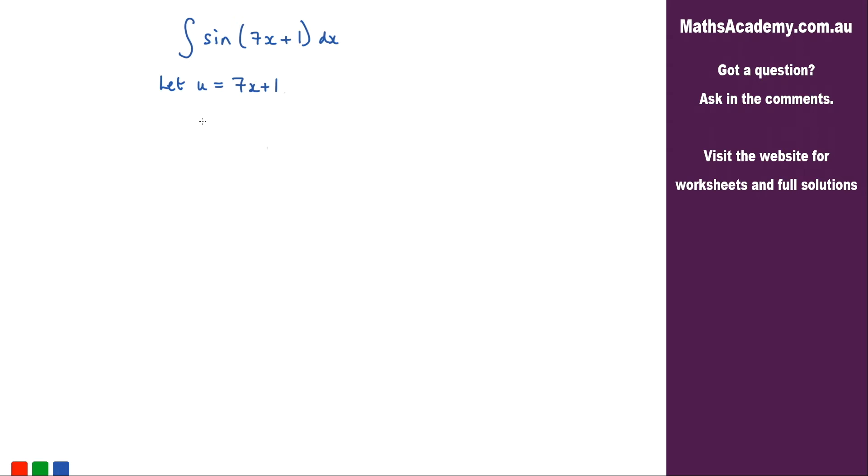Now I can differentiate that to get du over dx, that's just equal to 7, and I can rearrange that to find what dx is.